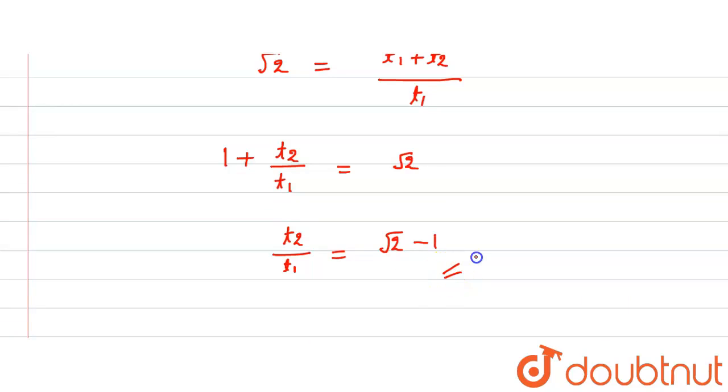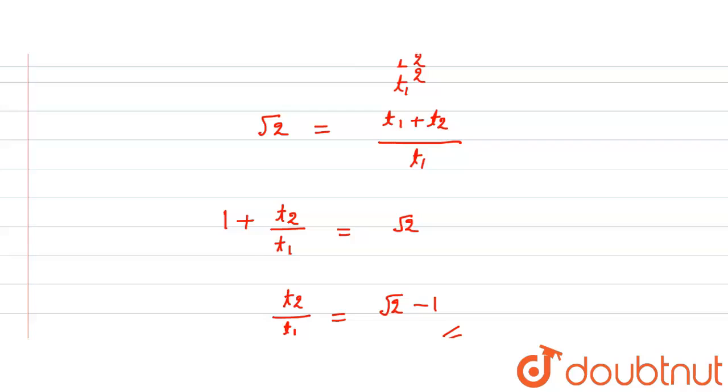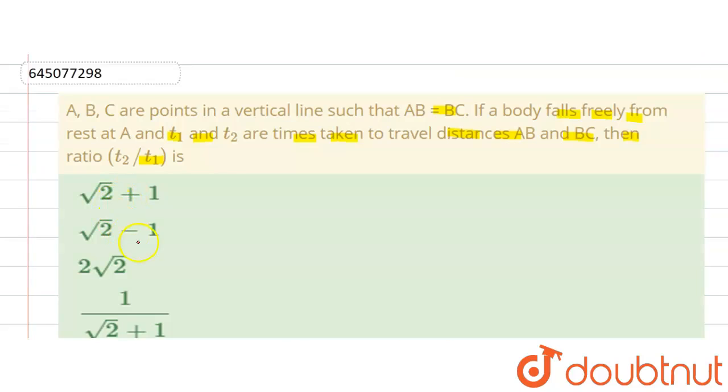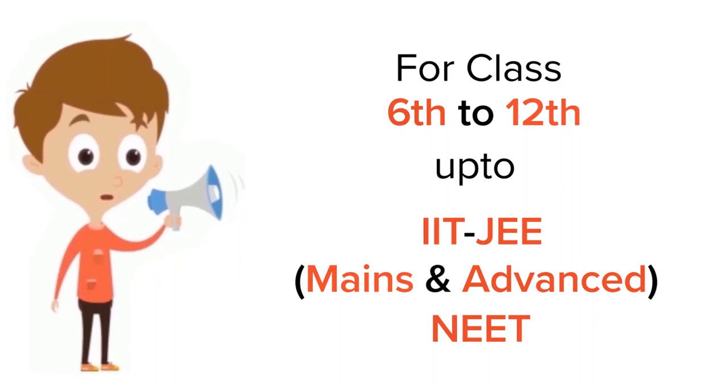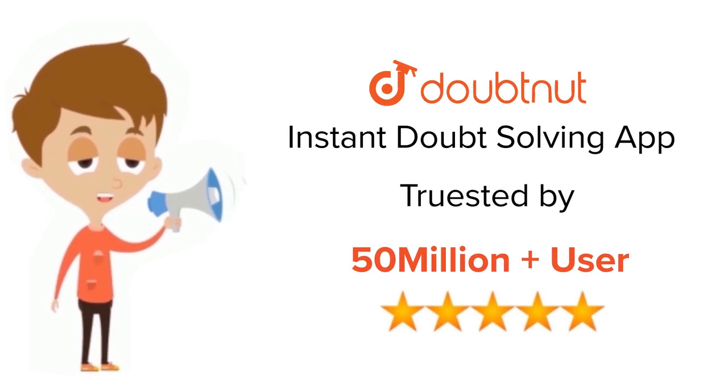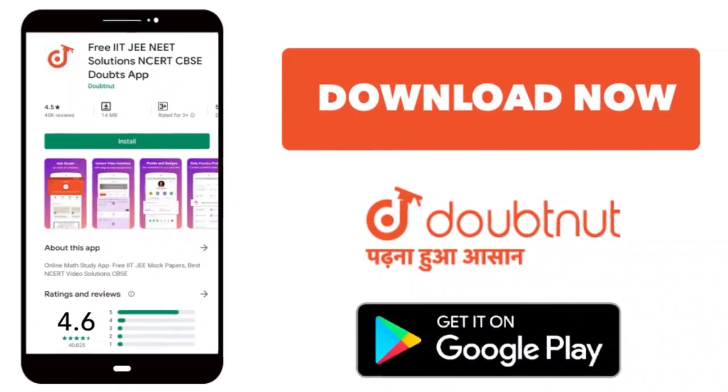So this is the ratio of t2 upon t1. Now check the option, that means under root 2 minus 1, second option is right. This is solution to this question guys, thank you. For class 6 to 12th, IIT-JEE and NEET level, trusted by more than 5 crore students, download Doubtnut app today.